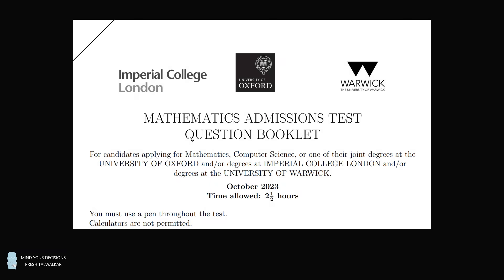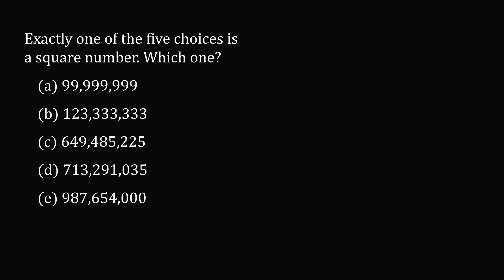Hey, this is Presh Talwalkar. There are a couple of nice number theory questions on the University of Oxford's mathematics admissions test. Importantly for this test, calculators are not permitted. Here is one question. Exactly one of the five choices below is a square number. Which one? One choice is $99,999,999.